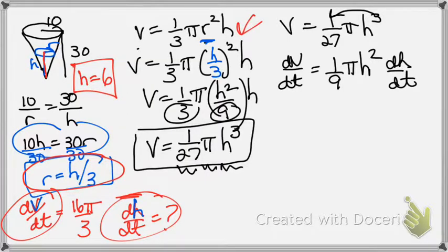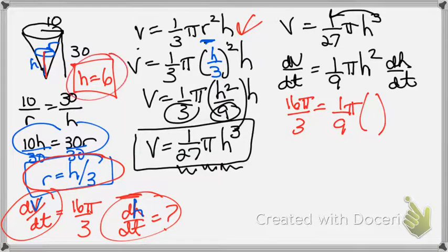All right. So dV/dt they gave us. That was 16π/3. At this moment in time, h is 6. But again, even if they had given me r, I could have found it. So 6 squared would be 36. dh/dt was the question.